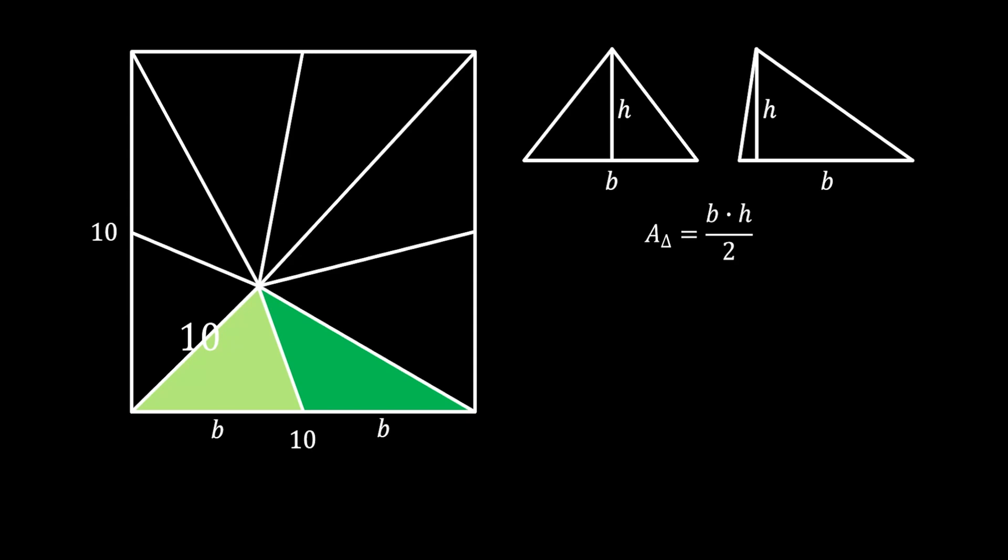So now, if we pull the height from their apex, you can see that both of those triangles share the same base and the same height. Which means that both of those triangles must have the same area, and I will label their area with capital A.